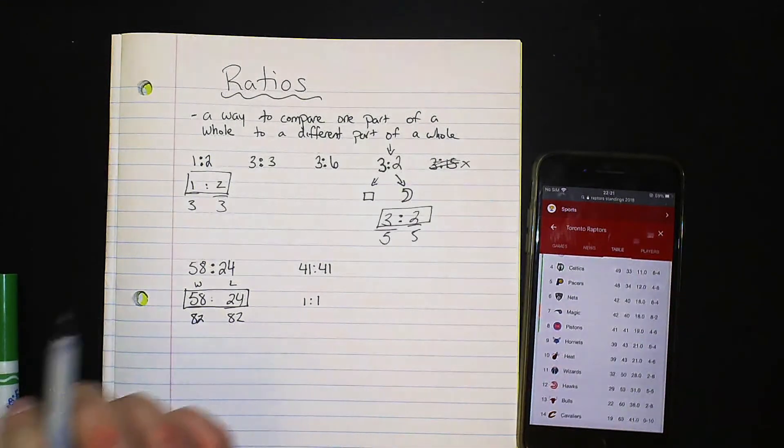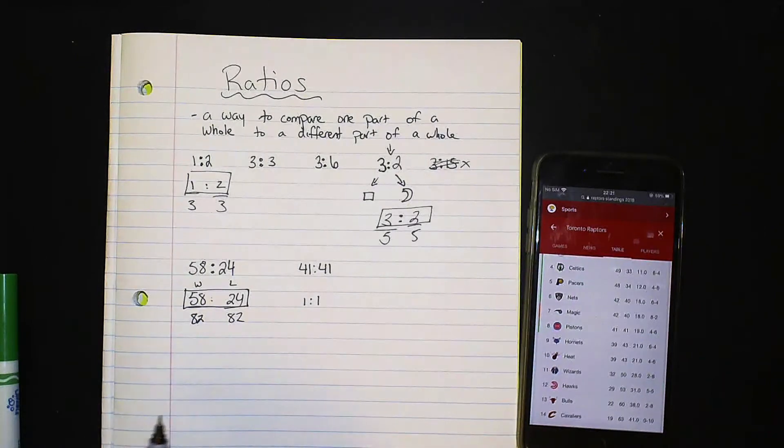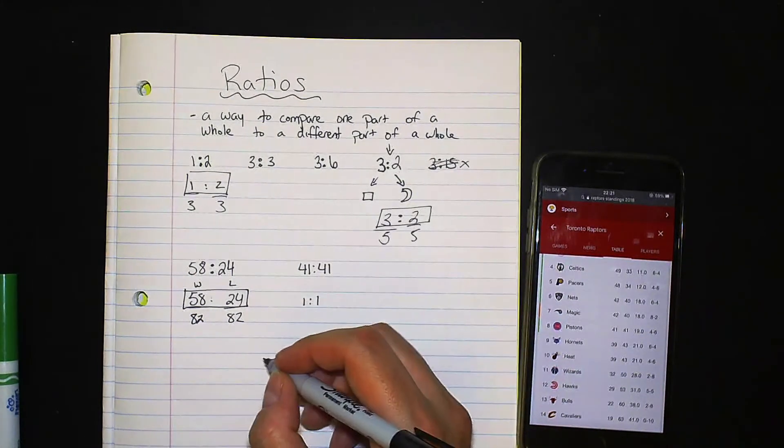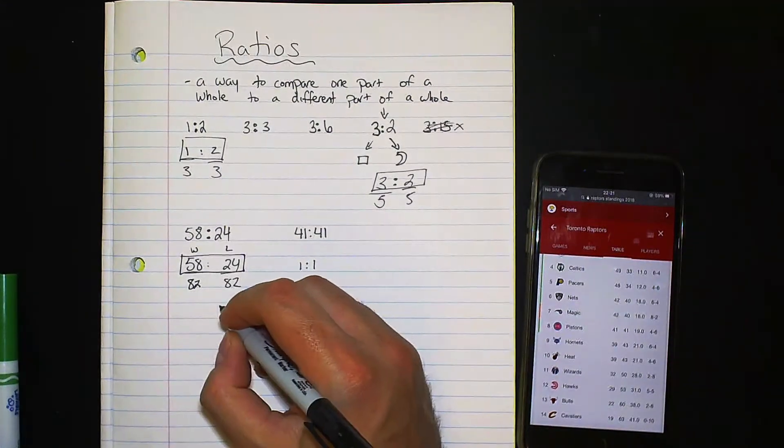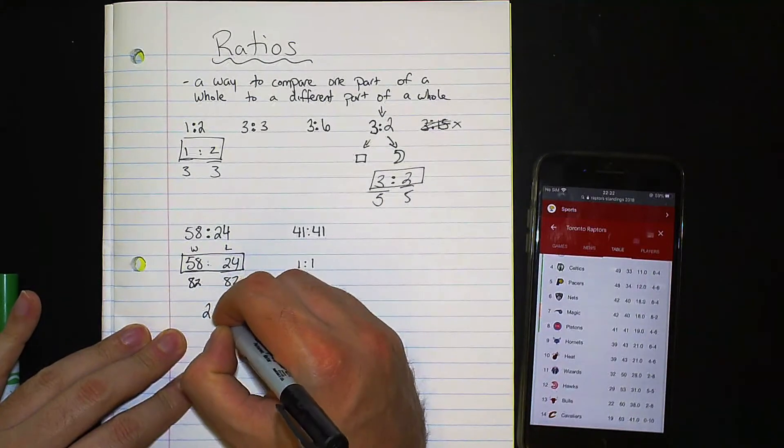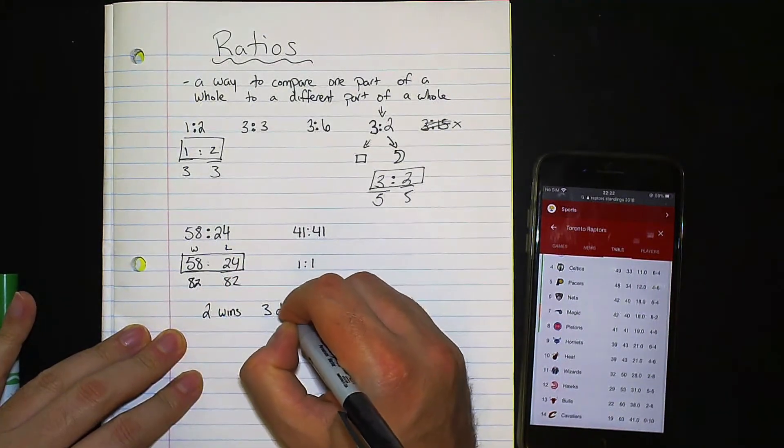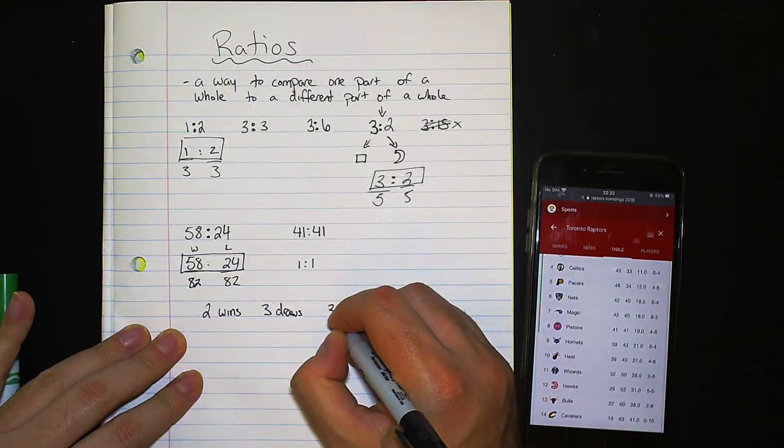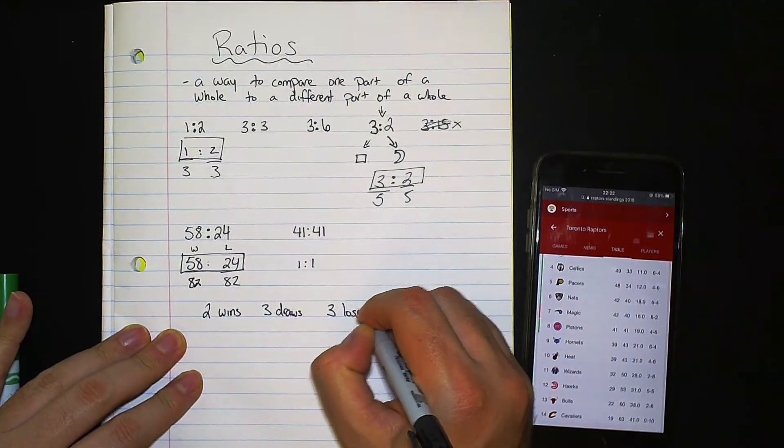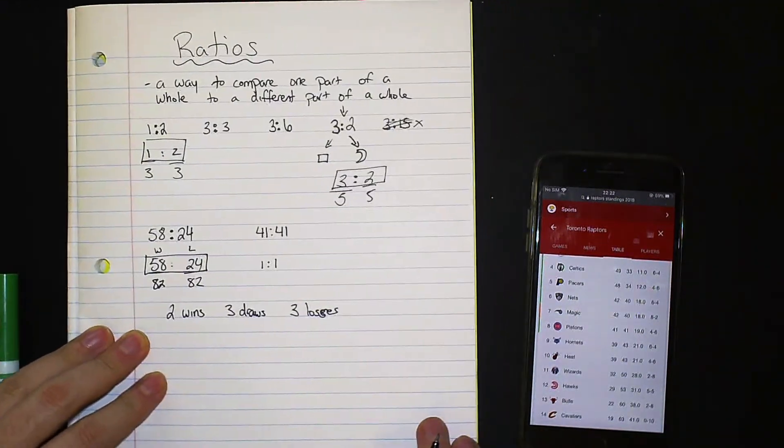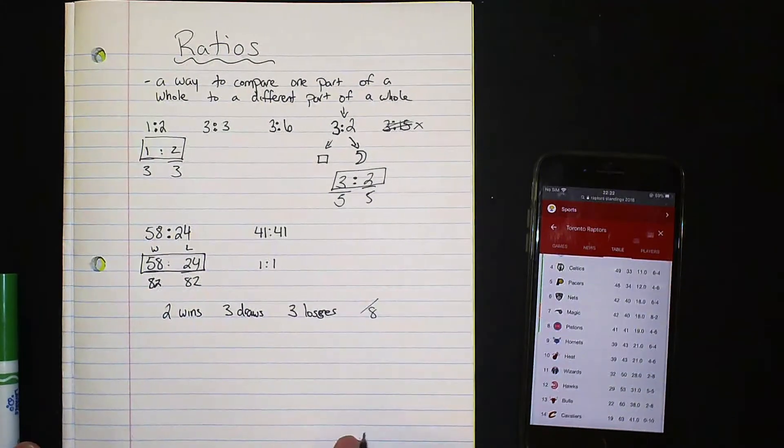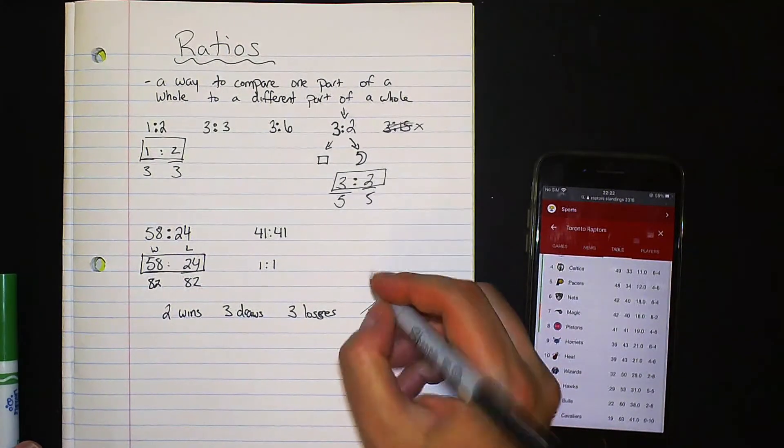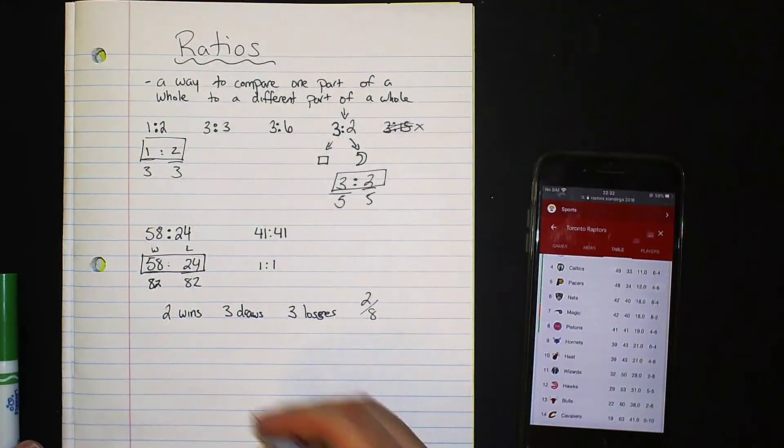I'm going to give you another example here. What I want to show you is I want to go back to the sports example. Let's just pretend that we're doing some soccer. So one team has two wins, three draws, and three losses. So how many total games did this team play? Well we know they played eight total games. How many wins do they have? Well they have two wins. Let's compare it to another team.